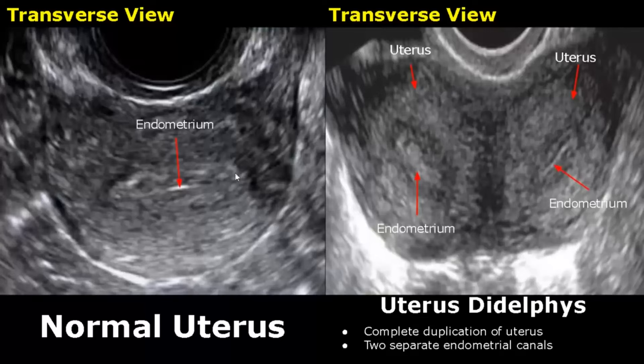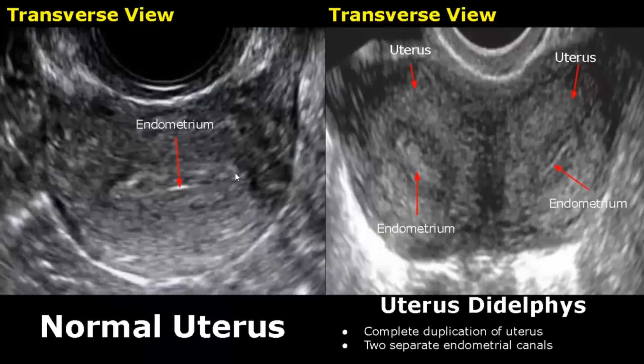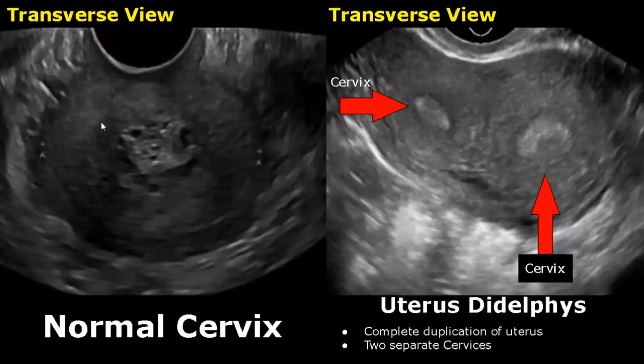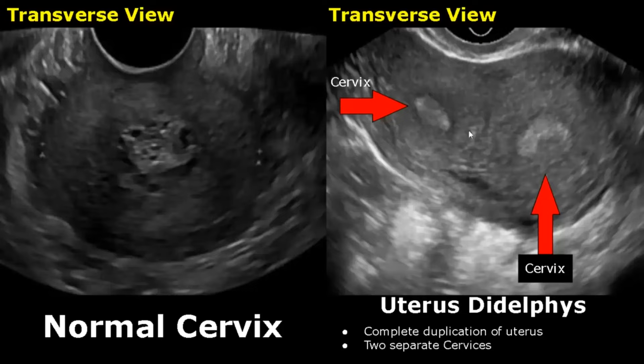Here we have transvaginal images in transverse plane showing the normal uterus versus uterus didelphys — we can see two separate uteri and two separate endometrial canals. These are transverse images of the cervix taken transvaginally showing the normal cervix and two separate cervices in uterus didelphys, because there is complete duplication of the uterus.